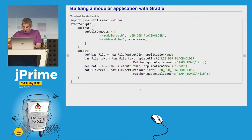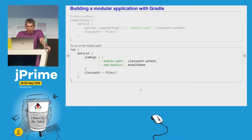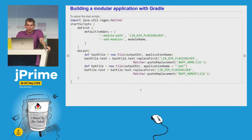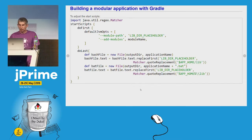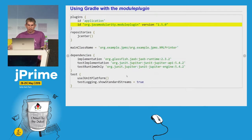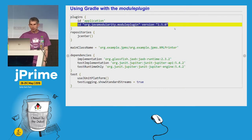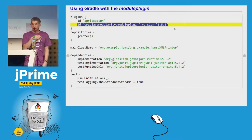So let's recap. We needed to tell Gradle how to compile and execute our code on the module path, how to compile and execute the tests on the module path, and how to adjust our start scripts in order to execute the code on the module path. There is a plugin that does all these things for you — this is the Java Modularity plugin. All you need to do is to apply this plugin in your Gradle build script and you're done. I hope you will appreciate this plugin now that you saw how much work you need to do without it.